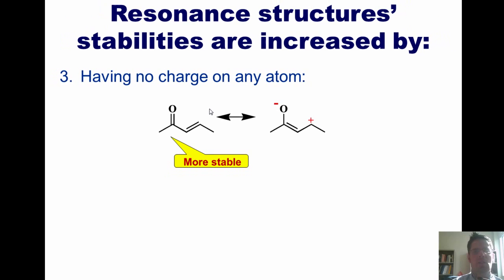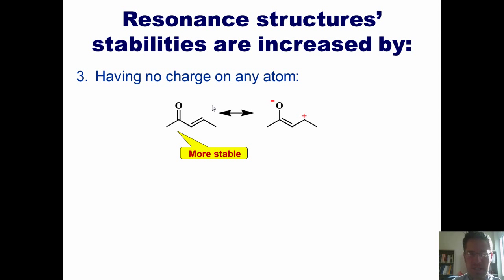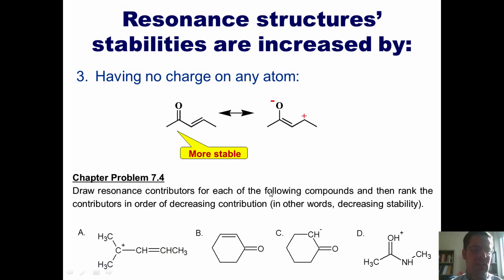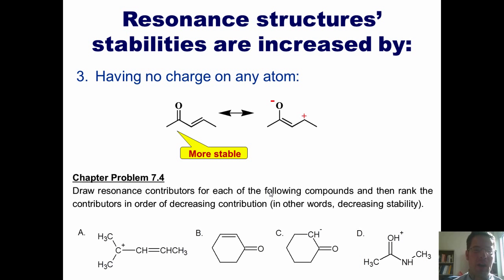So let's see if we have a mastery of this concept by looking at a chapter problem. I want you to draw resonance contributors for each of the following compounds and then rank the contributors in order of decreasing contribution — in other words, decreasing stability. I'm going to give you the answers momentarily, but before going on, if you wish, you can pause the video and attempt to do them on your own.